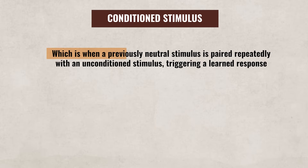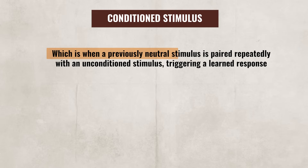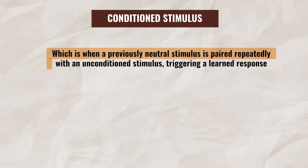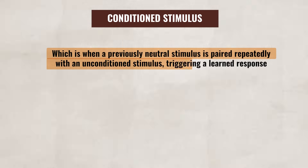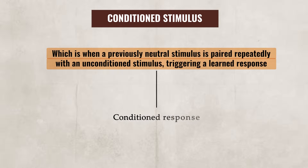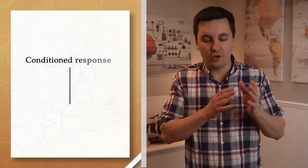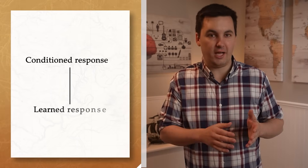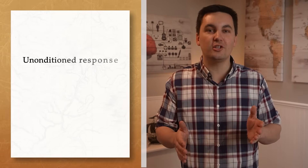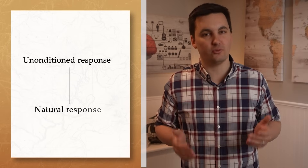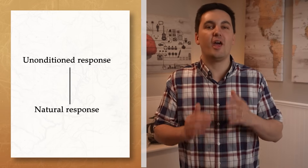Lastly, there is a conditioned stimulus, which is when a previously neutral stimulus is paired repeatedly with an unconditioned stimulus, triggering a learned response, also known as a conditioned response. A conditioned response is a learned response to a conditioned stimulus, while an unconditioned response is a natural response that happens without any learning.